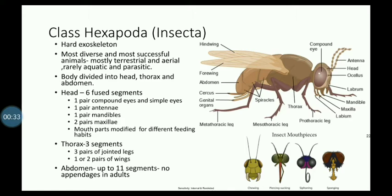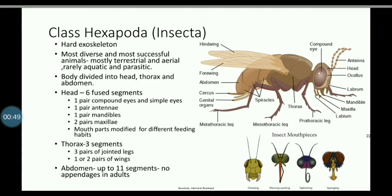Both terrestrial and aquatic forms are present. The head is made up of six fused segments: a pair of antennae, a pair of mandibles, a pair of maxillae, labium, and labrum. These appendages are present on the head.